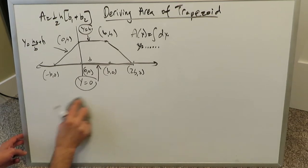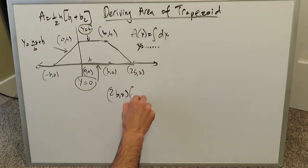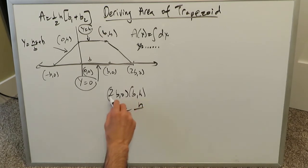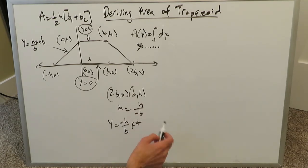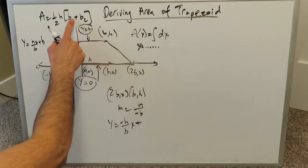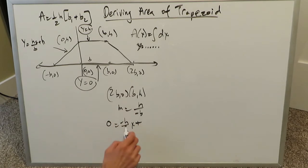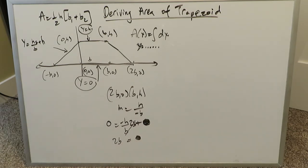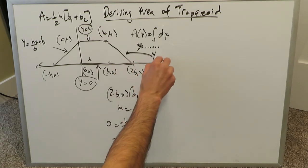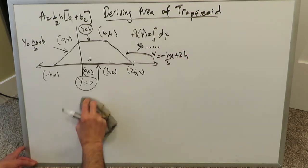Now for the right diagonal line, we expect a negative slope. Using points (2b, 0) and (b, h), the slope is h divided by (b − 2b), which is −h/b. To find the y-intercept, we substitute x = 2b and y = 0: the b's cancel, giving −2h, so the y-intercept is 2h. The equation becomes y = −(h/b)x + 2h.